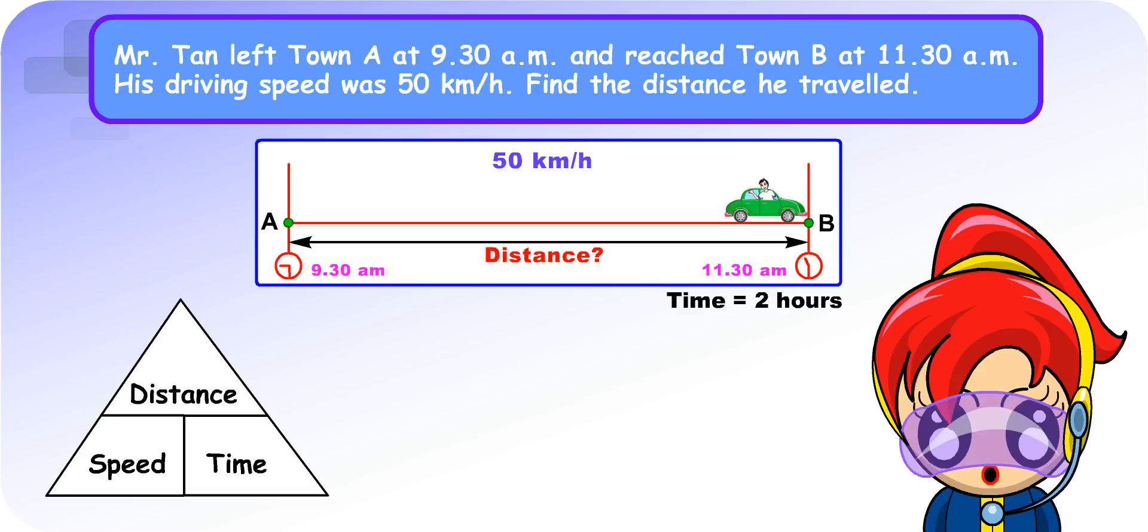To find distance, we have distance equals speed times time. Therefore, distance travelled equals 50 km per hour times 2 hours, which equals 100 km. Very good.